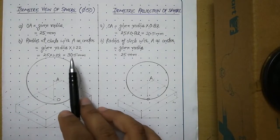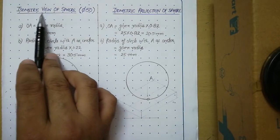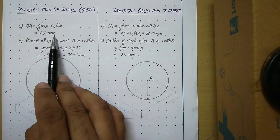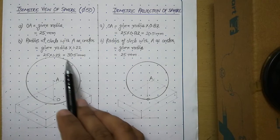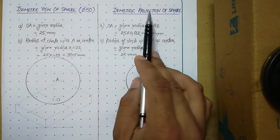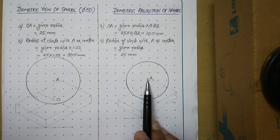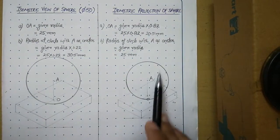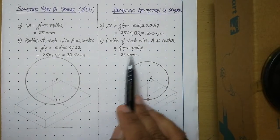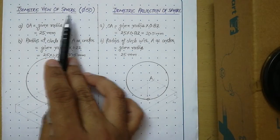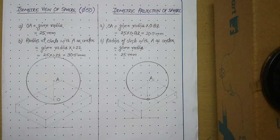Now let us compare these two. To draw the isometric view of the sphere: draw OA vertical line equal to the given radius, then with A as center draw a circle whose radius equals the given radius multiplied by 1.22. To draw the isometric projection of the sphere: draw vertical line OA equal to the given radius multiplied by 0.82, then with A as center draw a circle whose radius equals the given radius. Keep this concept in mind whenever drawing isometric view or isometric projection of a sphere. I hope this procedure is clear to you. Thank you very much.